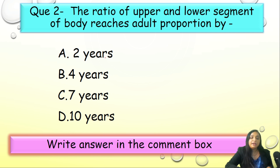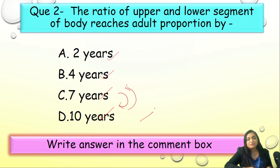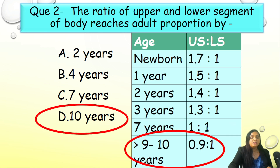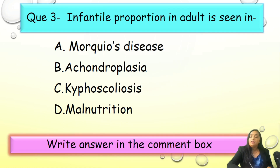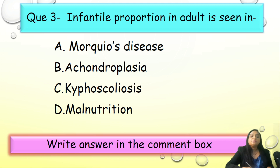Question 2 — the ratio of upper to lower segment reaches adult proportion at which age? Options: a) 2 years, b) 4 years, c) 7 years, d) 10 years. Do not get confused: at 7 years the ratio is 1:1, but the adult ratio of 0.9:1 is achieved by 9 to 10 years. So the correct answer is d) 10 years.